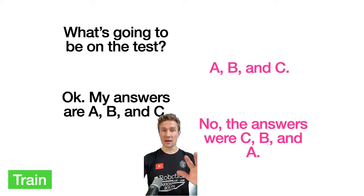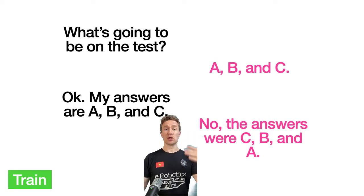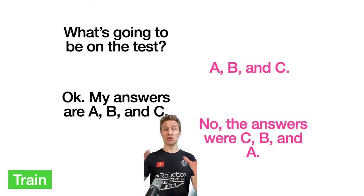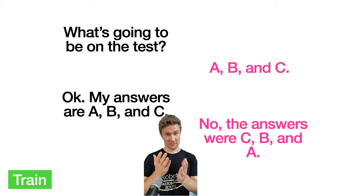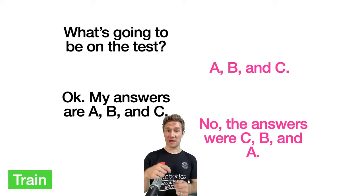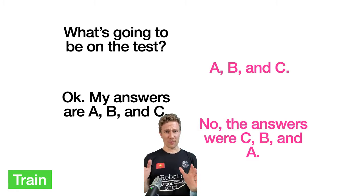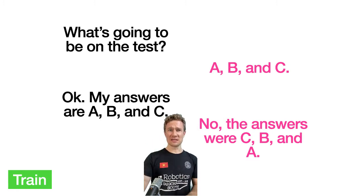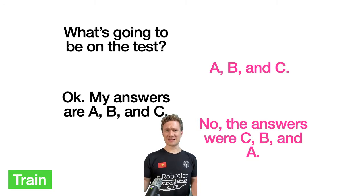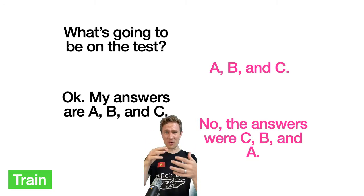Situation two: the student asks what's on the test, the teacher says A, B, and C. The student regurgitates A, B, and C. But the teacher says no — I was telling you A, B, and C were the topics, not the exact answers. I needed you to understand A, B, and C. On the test I'm going to switch up the order and change it a little bit. You want to make sure you're not oversimplifying when you tell your student or algorithm what it is you're going to have them do.